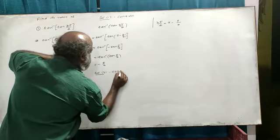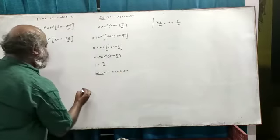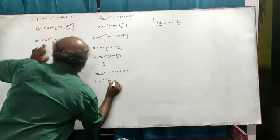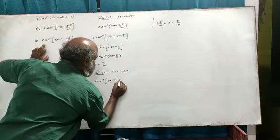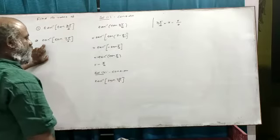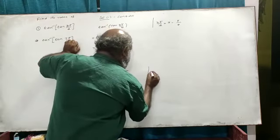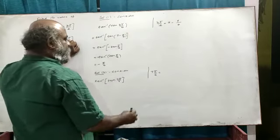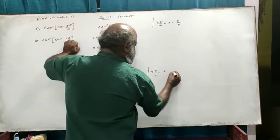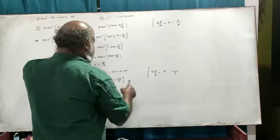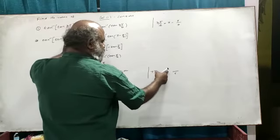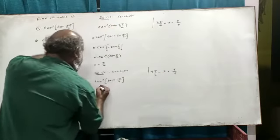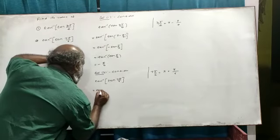Now consider tan inverse of tan(7π/6). We can write 7π/6 as 6π/6 plus π/6, which equals π plus π/6. So this is tan inverse of tan(π + π/6).